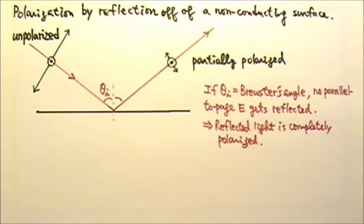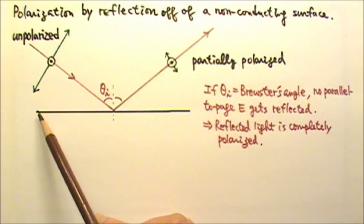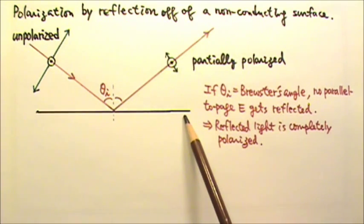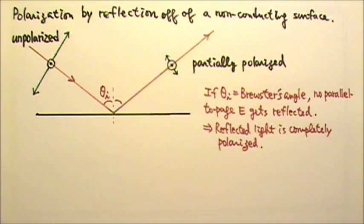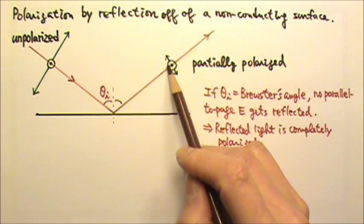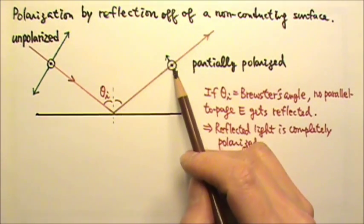When we are outdoors on a sunny day, a lot of the light that enters our eyes is reflected off of horizontal surfaces such as water, road, or snow. So sunglasses made of vertical polarizers can help us block the strong horizontal component of reflected light.